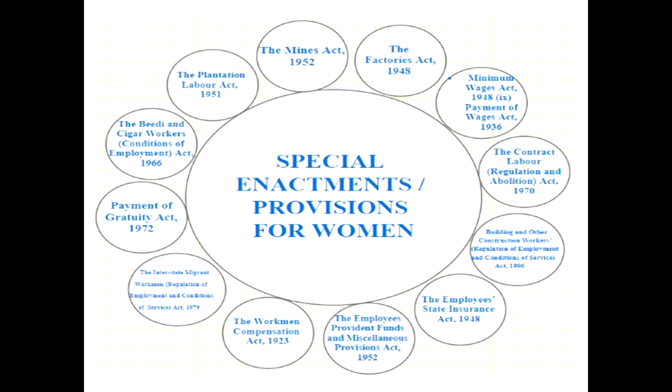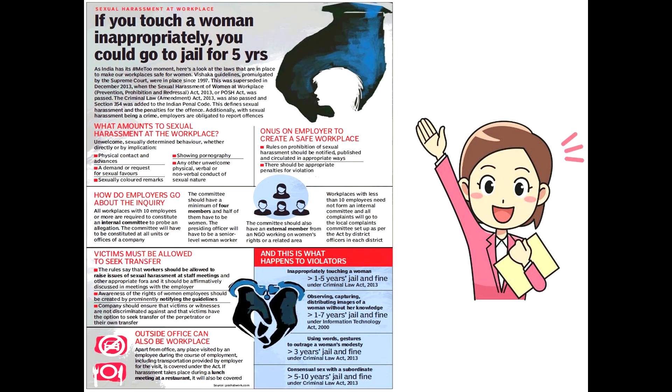Regarding sexual harassment at the workplace: India has its MeToo movement. Looking at the laws in place to make workplaces safe for women — what amounts to sexual harassment includes unwelcome or sexually determined behavior whether directly or by implication, physical contact, demand for sexual favors, sexual colored remarks, or showing pornography. If you inappropriately touch a woman, you can get up to one to five years of jail and a fine up to 10,000 under the criminal act.